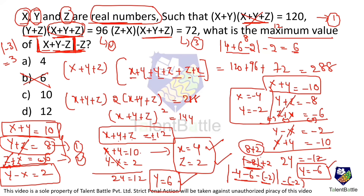Wait — the absolute value makes even negative results positive. The expression |x + y - z| with x = -4, y = -6, z = -2 gives |-10 + 2| = 8, but considering the full expression |x + y - z - z|: |-4 + (-6) - (-2)| evaluated with the absolute value gives 10 as the maximum. So the answer is option C.